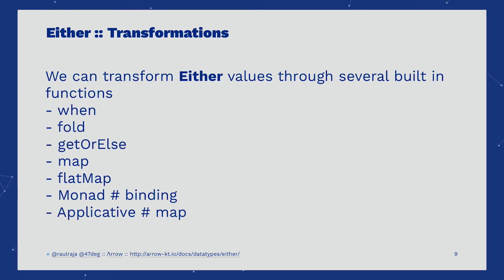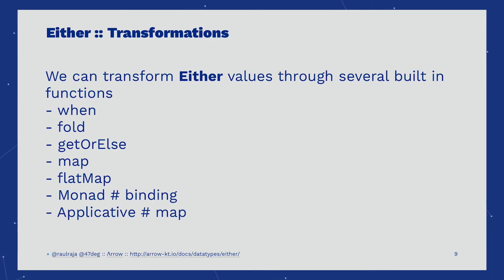We can transform the inner contents of Either with several built-in functions such as fold, getOrElse, map, and flatMap. This might be familiar to you because we saw the same functions in Option. This is part of Arrow's unified model of programming — we take all of the functional combinators and try to apply them to as many data types as possible so that all of them share the same API.